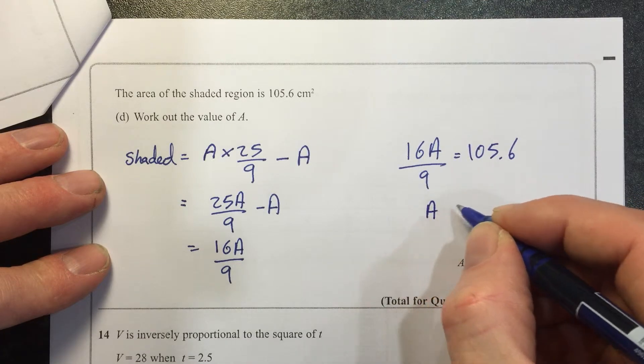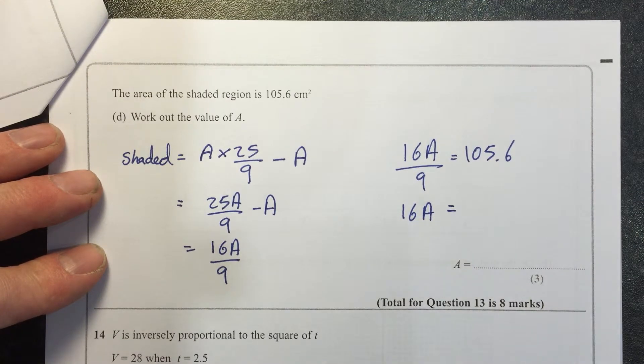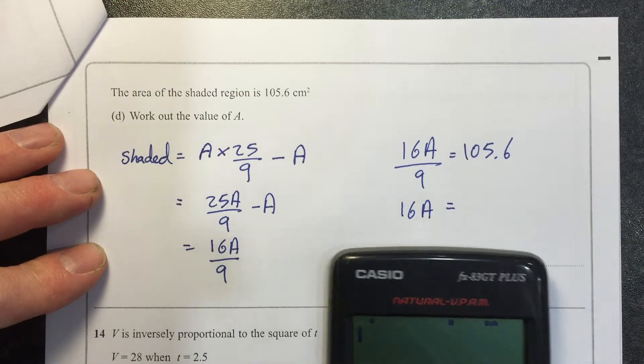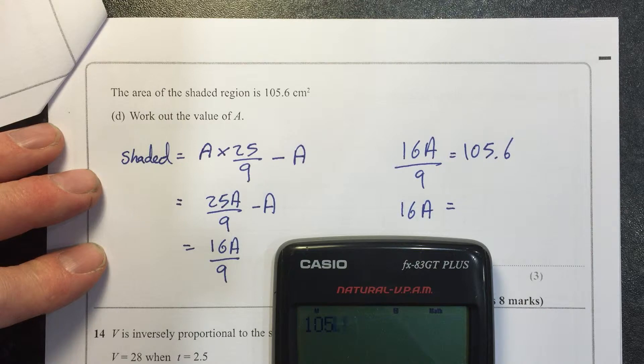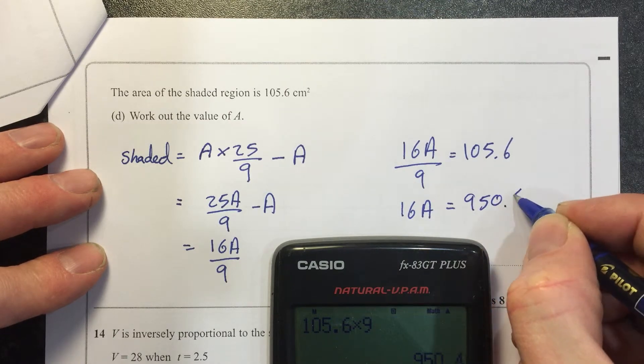So A, let's do 16A equals, multiply both sides by 9. 9 times 105.6 equals 950.4.